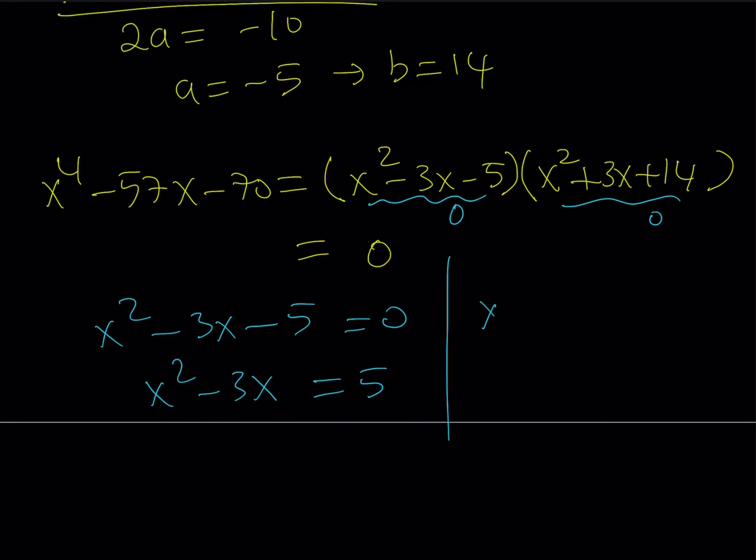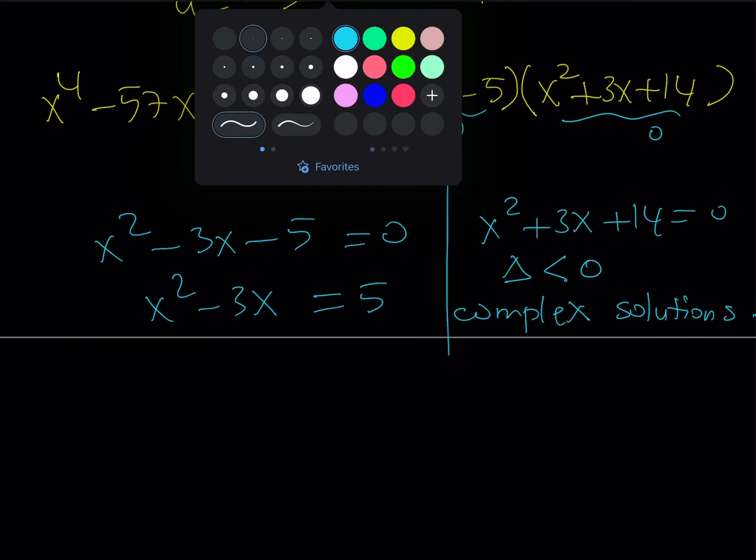What about the other piece? Doesn't that give us any other solutions? Well, if you look at this quadratic equation, you're going to find that this discriminant is less than 0. Therefore, you're not going to get any real solutions. Forget about, let alone, integers. You're not even getting real solutions from here. So, both solutions of this quadratic will be complex. So, that doesn't really help us because we're looking for integer solutions.